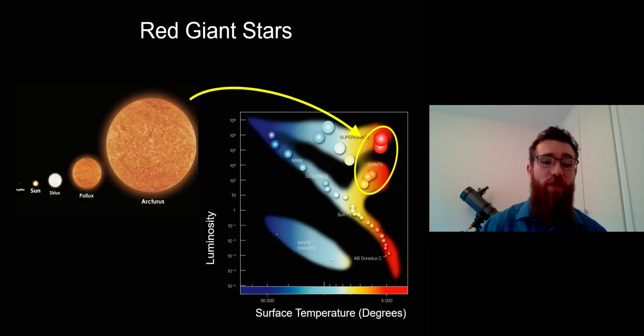Once stars are done on the main sequence—specifically the sun, so solar-size stars with the same sort of mass as the sun—once they finish the main sequence and that hydrogen in their core is fused into helium, they actually move on to the red giant branch of the HR diagram. They move to the upper right.